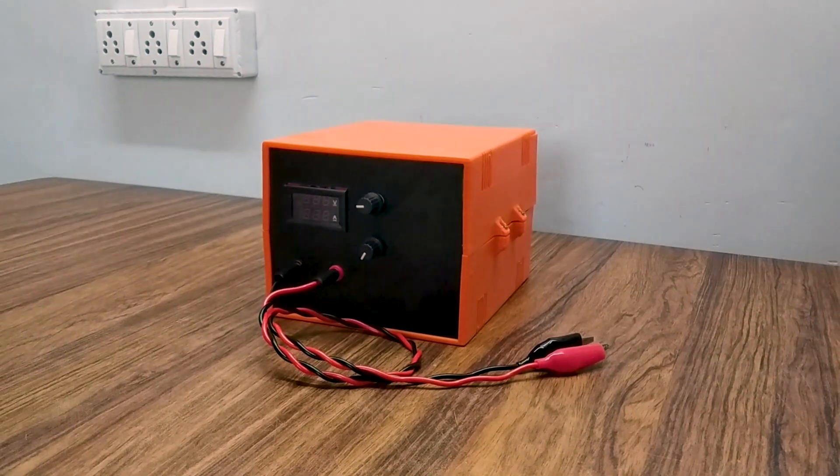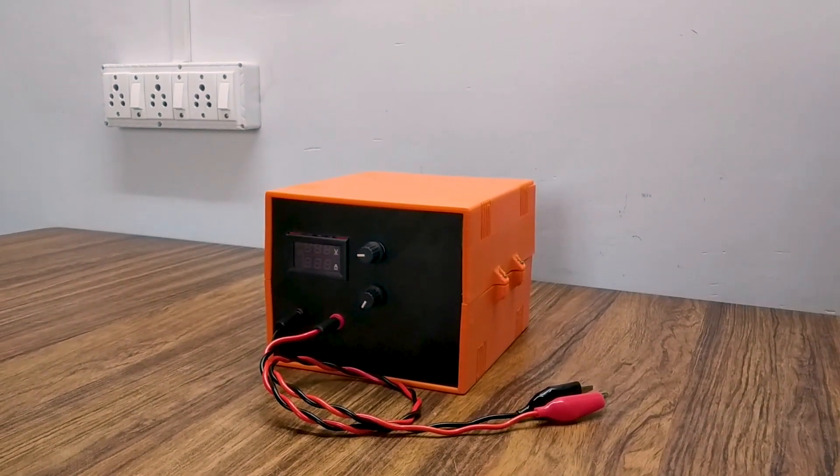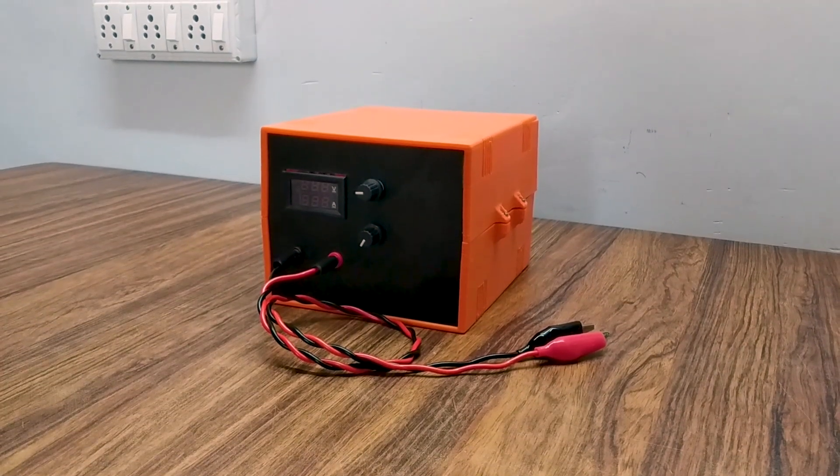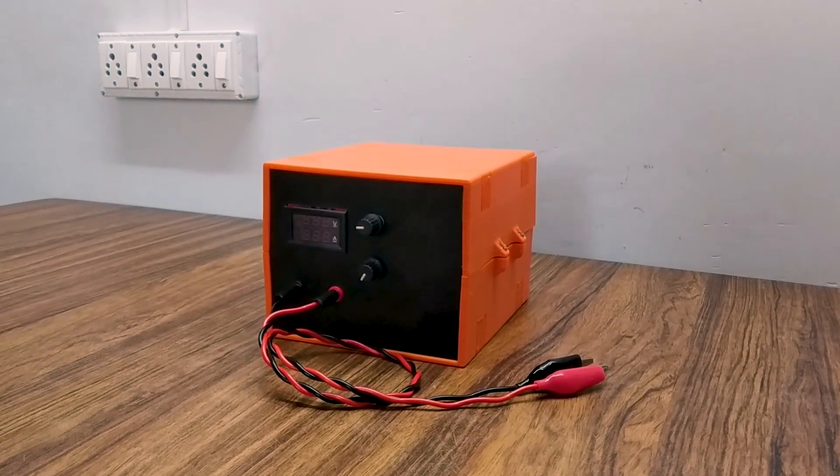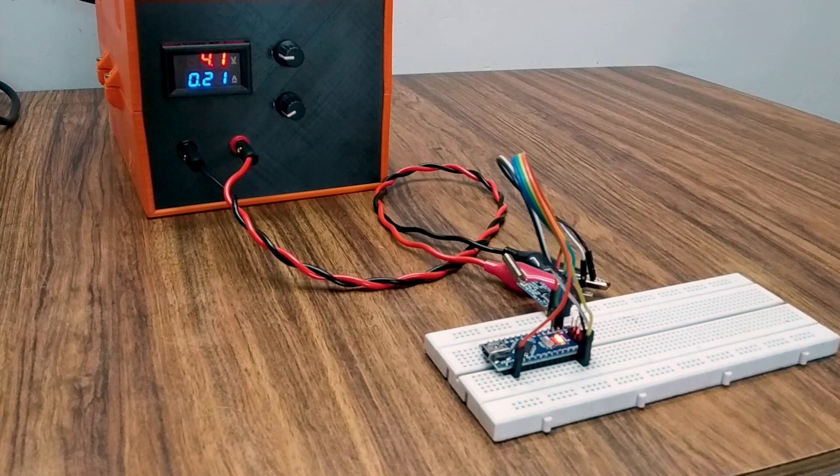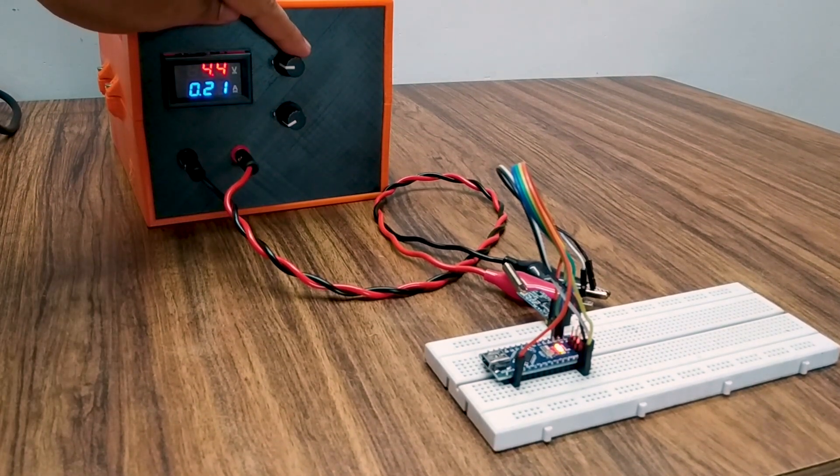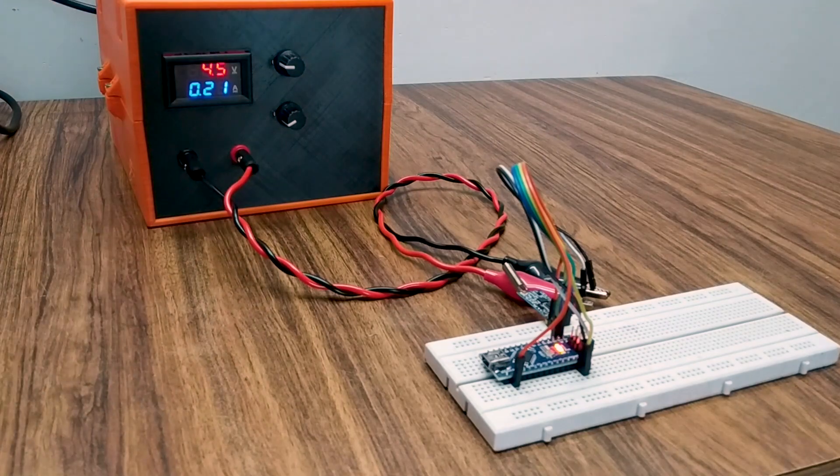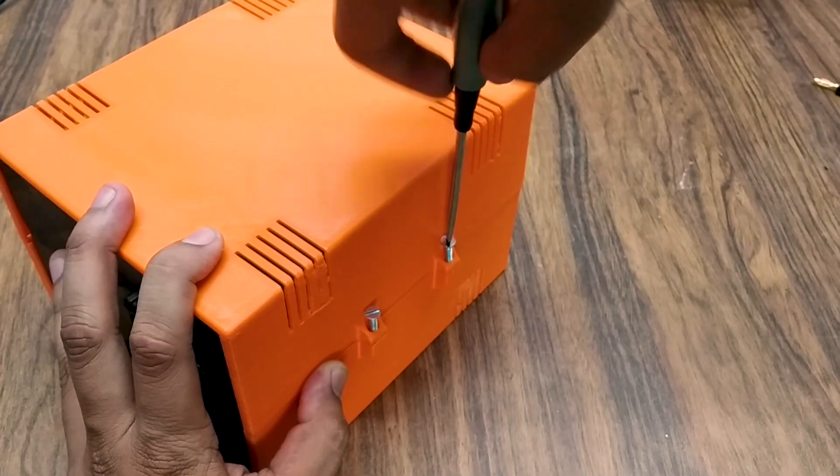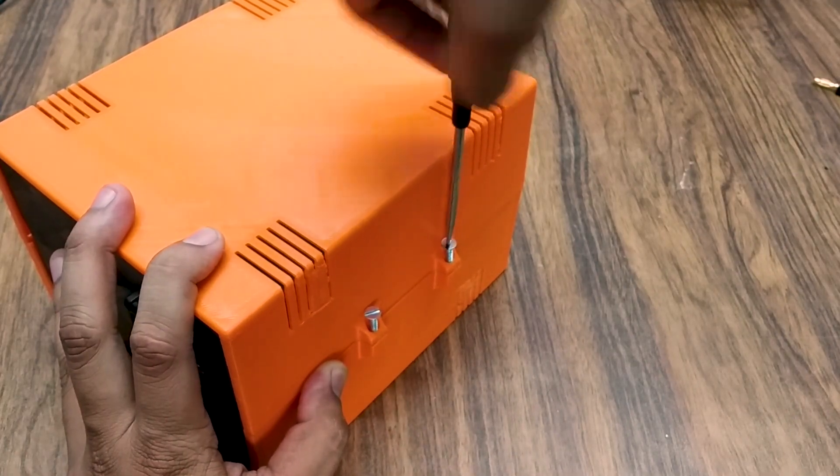But being a DIY hobbyist, I decided to make my own lab bench power supply with basic features like constant current and voltage, a voltage range of 1.25 volts to 34 volts and a current range from 0 to 5 amps. So let's see how I made this not-so-planned lab bench power supply and how you can make one too.